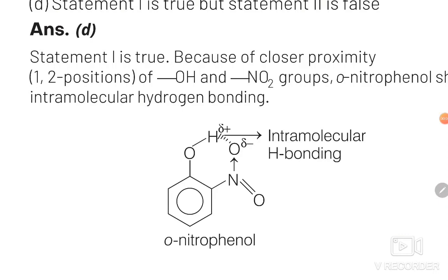Because the NO₂ group and OH group are close to each other, there is intramolecular hydrogen bonding in ortho-nitrophenol. This creates attraction within the molecule, resulting in less attraction between two different molecules of ortho-nitrophenol. Therefore it is easier to separate the molecules, and ortho-nitrophenol has low melting and low boiling point. Because it has a low boiling point it is steam volatile — so statement 1 is correct — but because it has a low melting point, statement 2 is actually wrong.